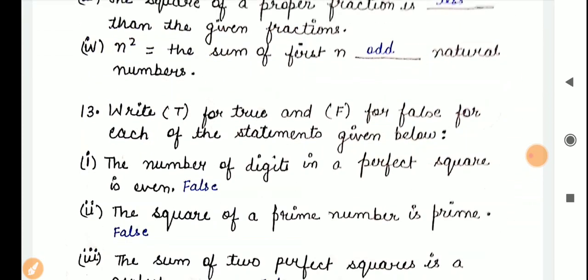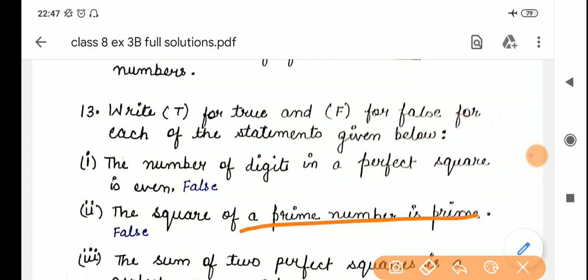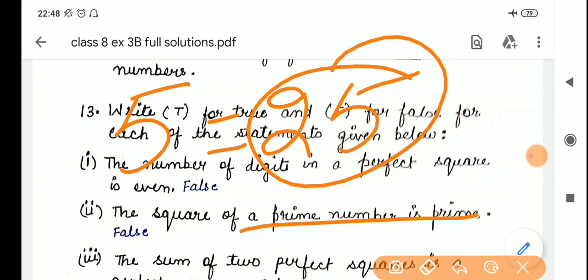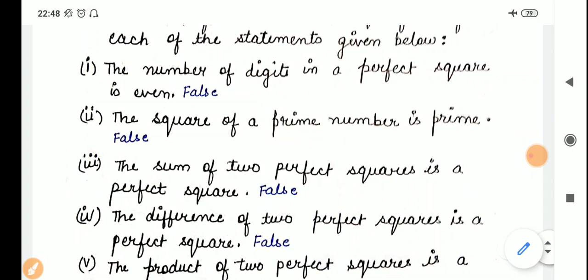Let's check it. The square of a prime number. Square of a prime number. Let's take a prime number. 5 is a prime number. So, square of 5 is 25. Is 25 prime? No. So, false.